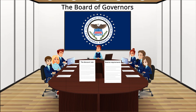The Federal Reserve has three tools at its disposal to conduct monetary policy: open market operations, the discount rate, and reserve requirements. These three tools are actually controlled by two different entities. The Board of Governors of the Federal Reserve System is responsible for setting the discount rate and the reserve requirements. The Federal Open Market Committee is responsible for open market operations.